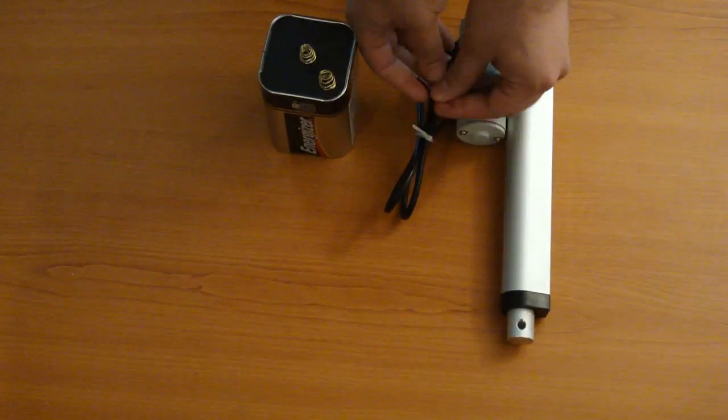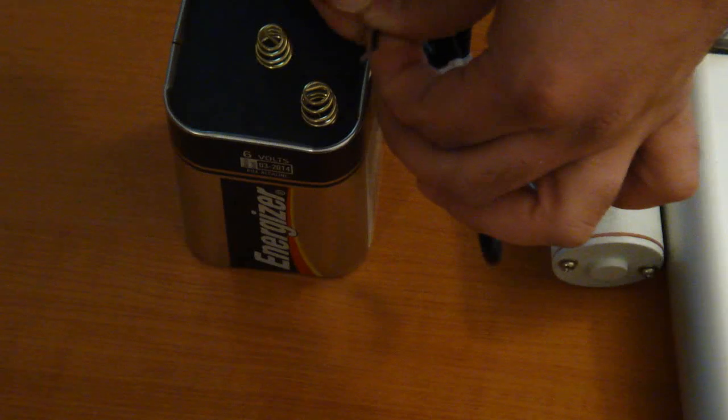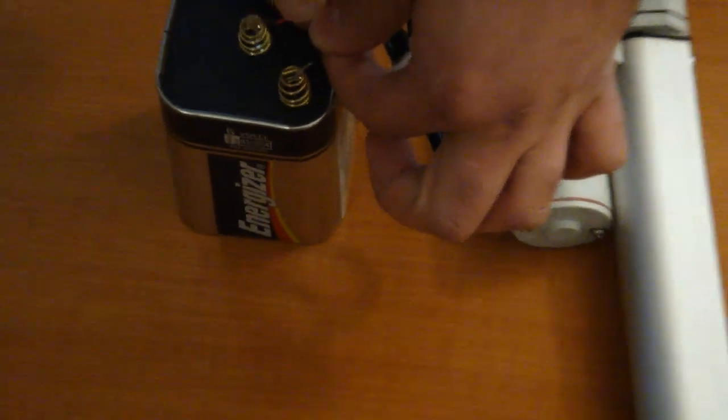As you can see when you purchase the actuator you get two wires coming out of it, a red and a black. All you need to do is attach it to the battery and it will move forward.